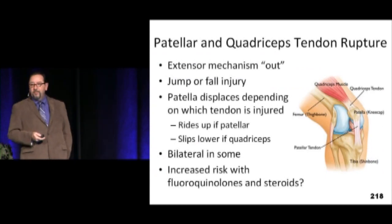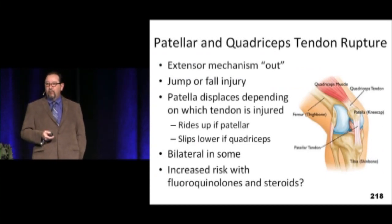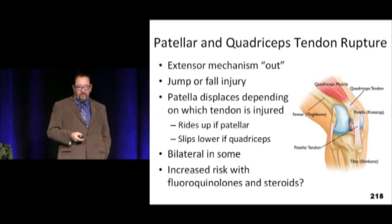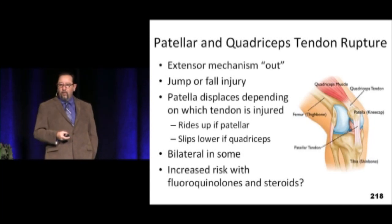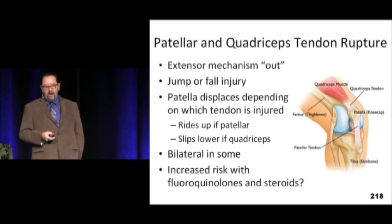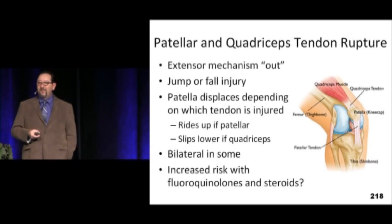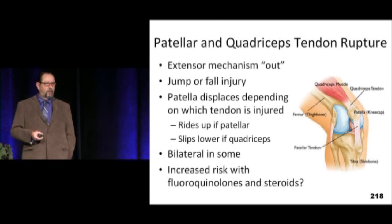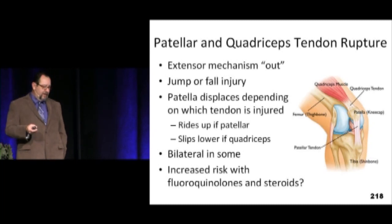Both the patellar and the quadriceps tendon can rupture, and then the person won't be able to lift an extended leg — the extensor mechanism is out. We've already talked about fluoroquinolones and steroids as risk factors. If the quadriceps tendon is out, the patella will ride low — patella baja. If the patellar tendon is out, on a lateral view the patella will be high — patella alta.